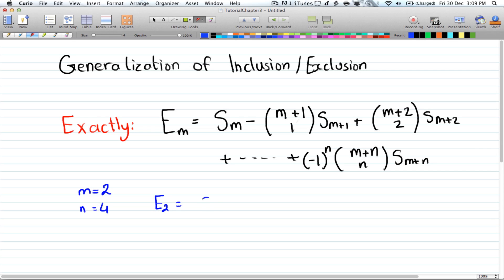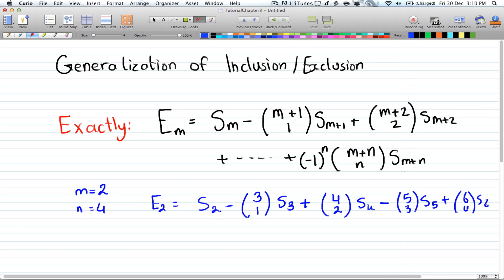And that will be equal to s of 2 minus (2+1) 3 choose 1 times s of 3 plus (2+2) which is 4 choose 2 s of 4. Make sure that all the odd ones have a minus sign in front of them. So minus 5 choose 3 of s_5 plus 6 choose 4 times s_6, and we're done.